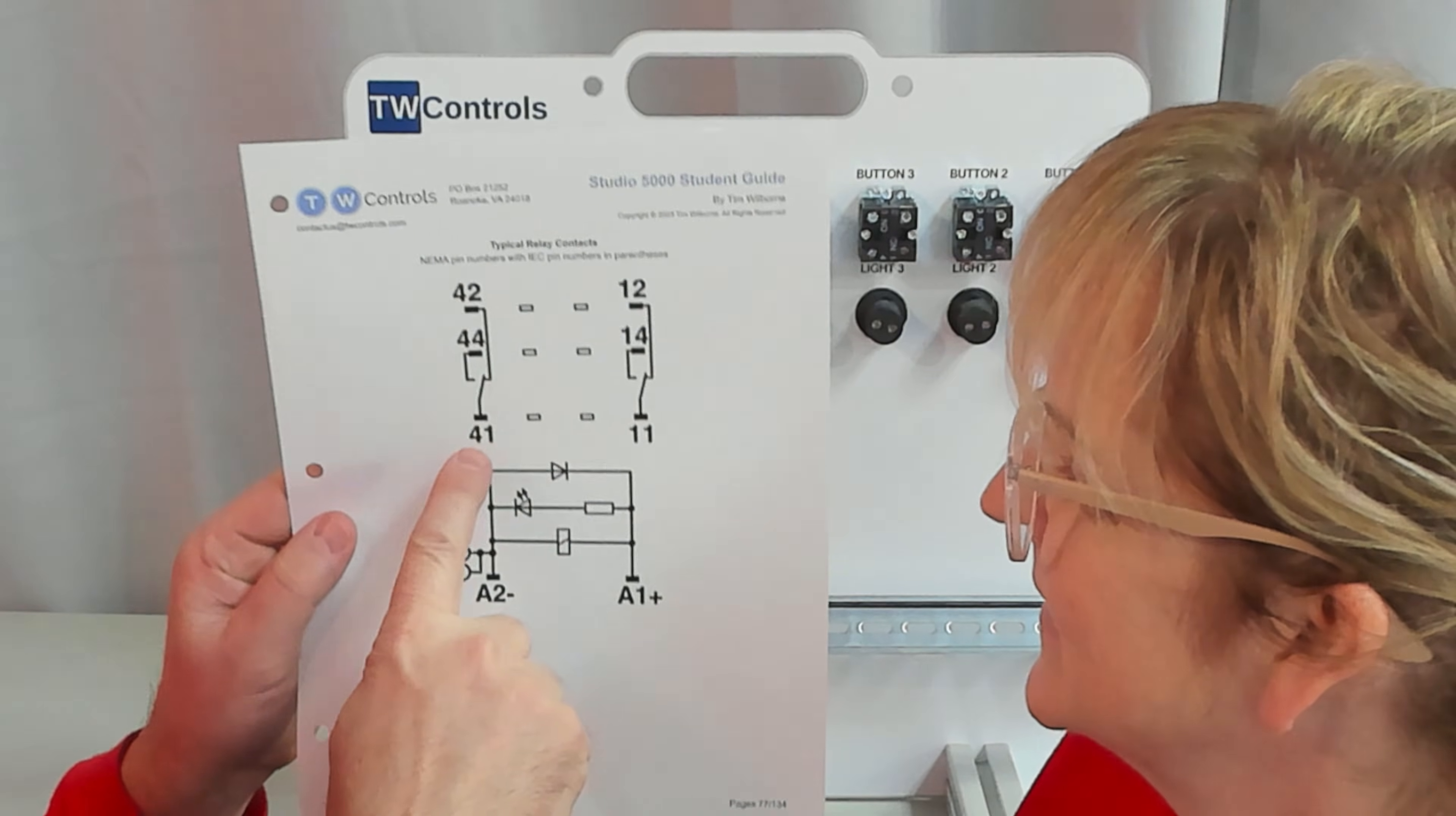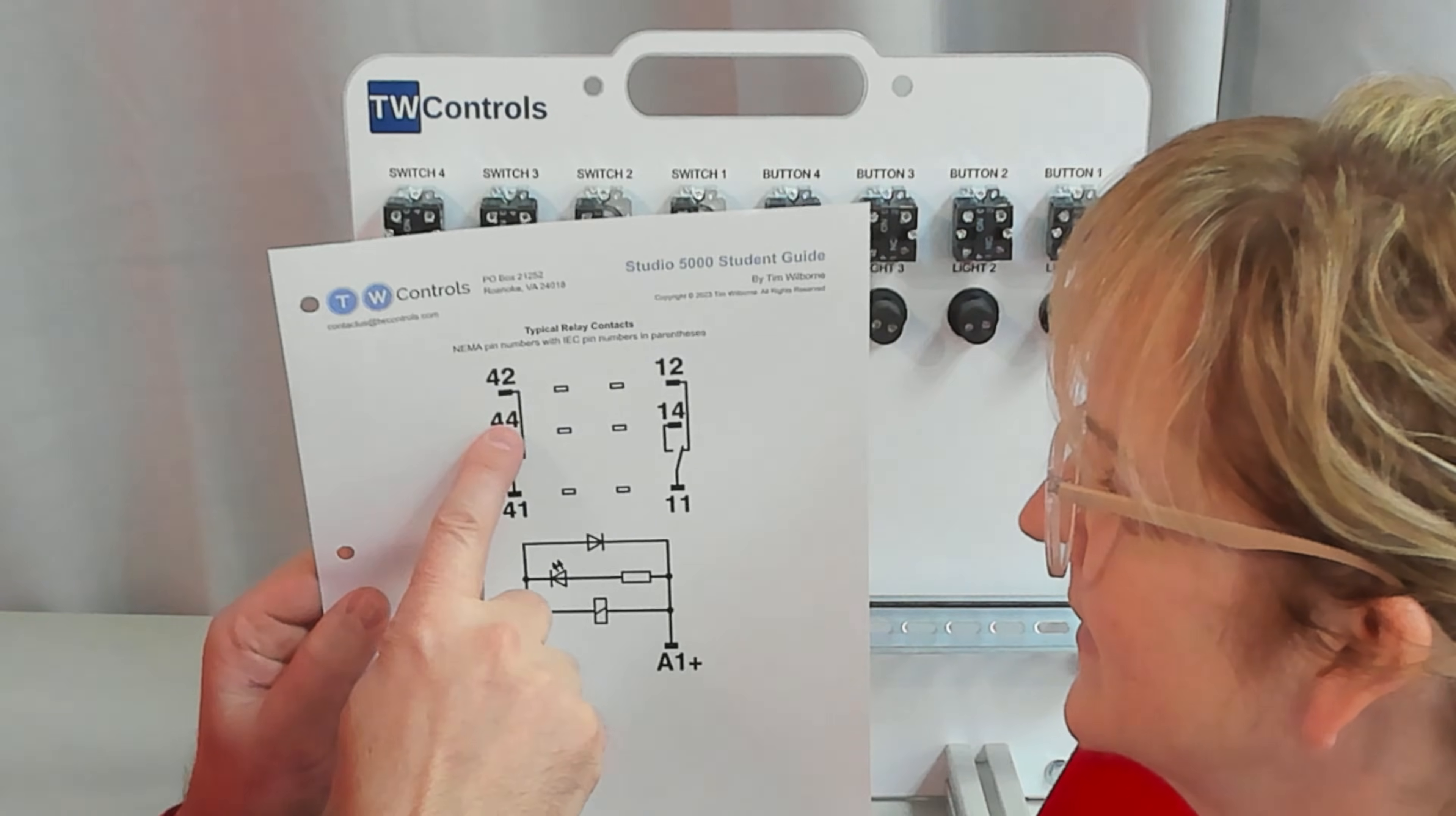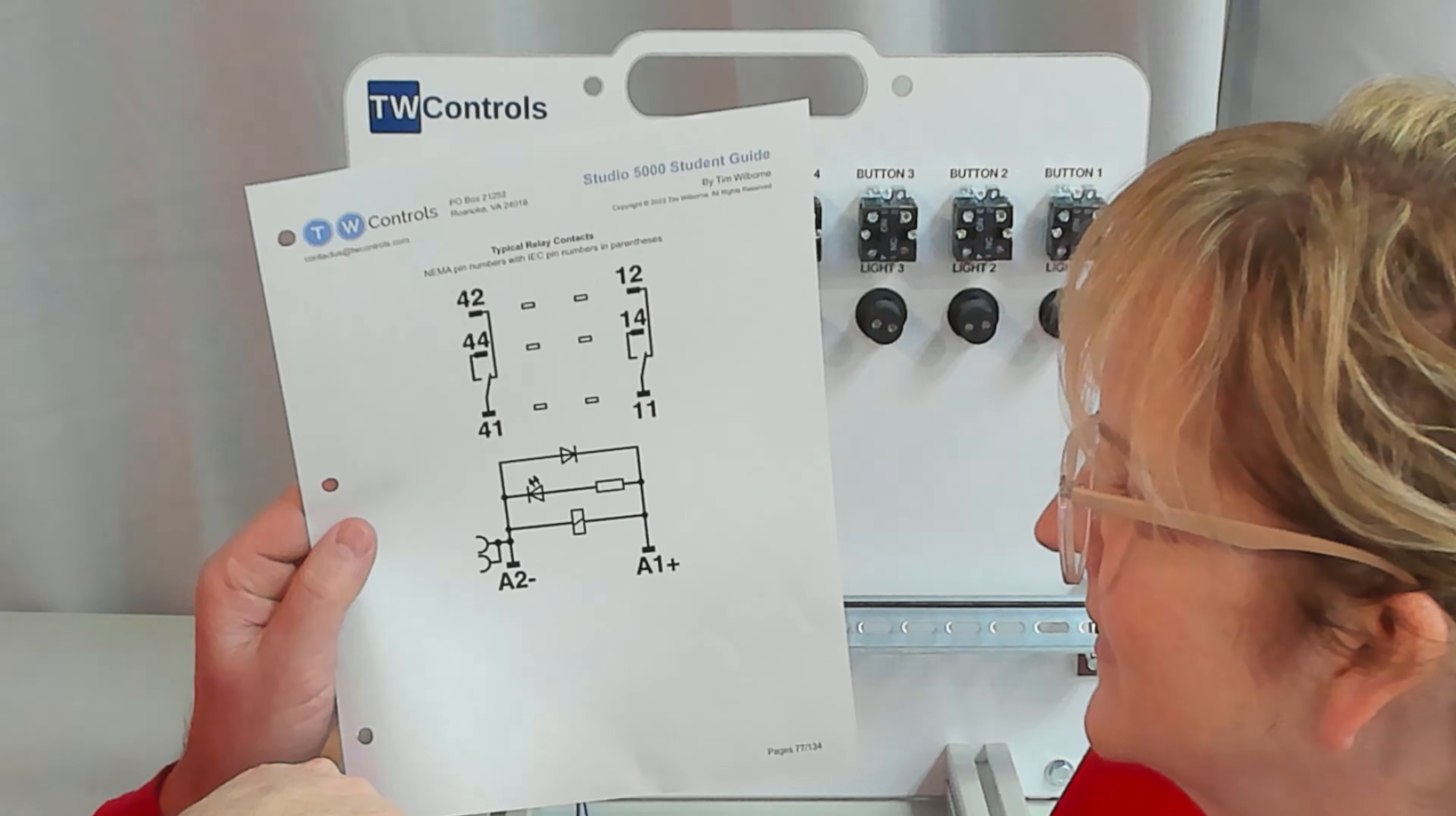Now we can take a wire from the plus 24 volt to 41 to feed power to that contact that we're switching. And we're going to take a wire from 44, which is the normally open, to our green light. And then we're going to take our green light back to the minus of our power supply.